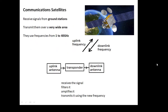Let's start with communication satellites. They receive signals from ground stations on the surface of the Earth and transmit this information over a very wide area — that's the advantage of satellites, you can transmit information over a very wide area. They use frequencies from 1 to 40 gigahertz, very much microwaves.